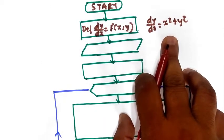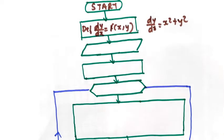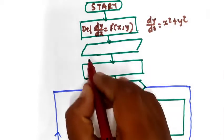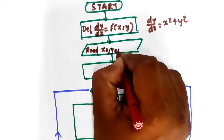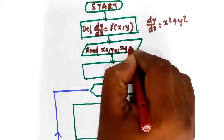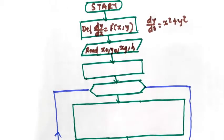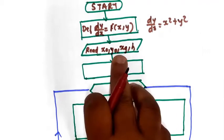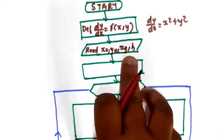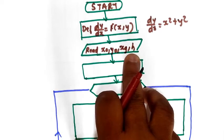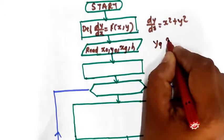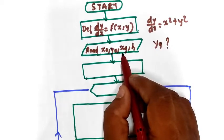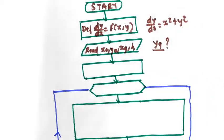The next step is to enter the initial value of x and y. Read x0, y0, xg, and h. You have to enter the initial value of x and y as x0 and y0, the step size h, and the value of xg for which yg is to be found out — that is, the value of xg where the yg value is to be determined.